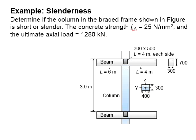Let us try an example to determine the slenderness of a column. The column is in a braced frame. It has a compressive strength of 25 N per mm squared and the ultimate axial load is 1280 kN.